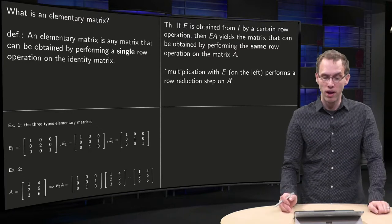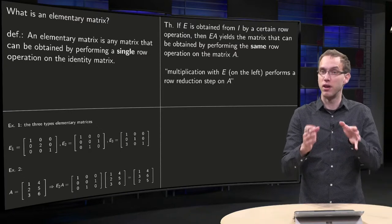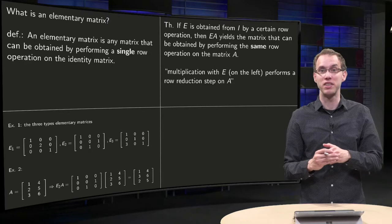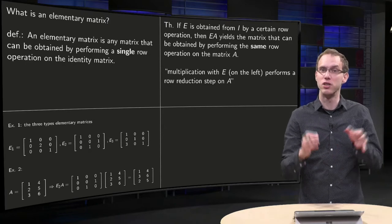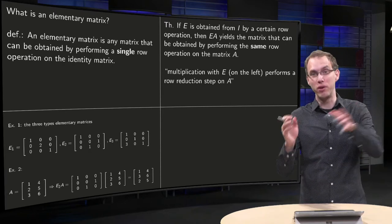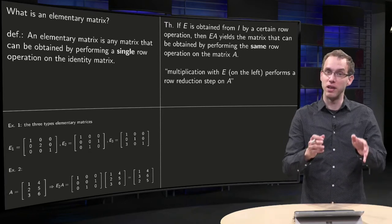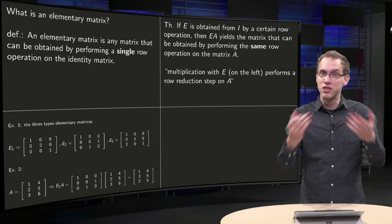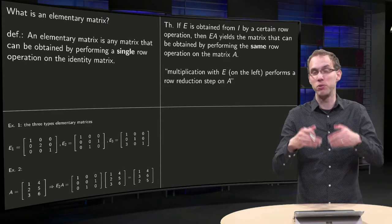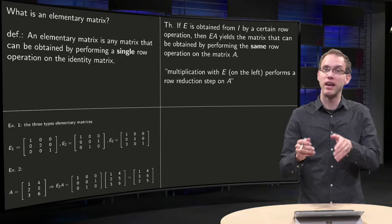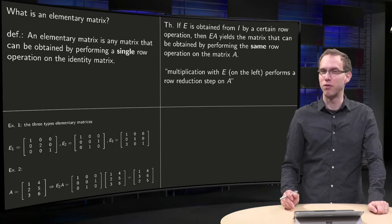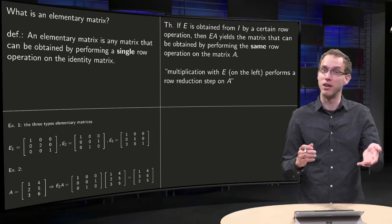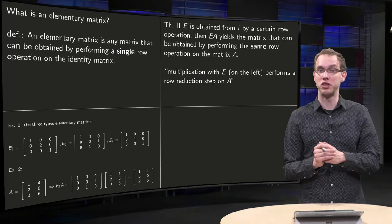And this is true in general. Suppose you have your identity matrix and you obtain an elementary matrix E by performing one row operation. If you now have another matrix A and multiply on the left by E, the product will apply the same row operation to A as was done to I to obtain E. In short: multiplication with an elementary matrix E on the left does one row reduction step on your matrix A.